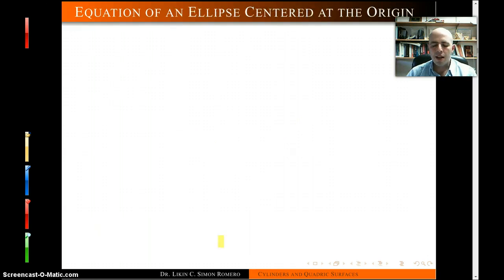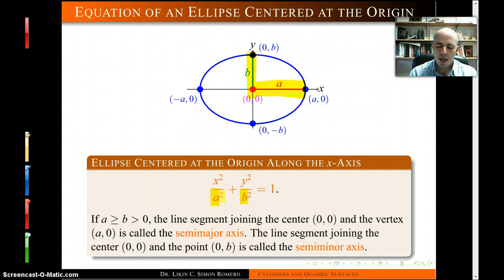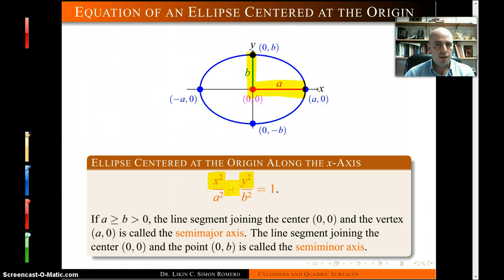An ellipse centered at the origin has an equation where A and B describe the length of two segments — one called the semi-major axis and the other the semi-minor axis. Technically, A and B describe how we can stretch a circle to get an ellipse. One key feature is that both variables are raised to the square and they have a plus sign between them.